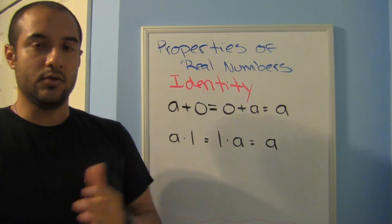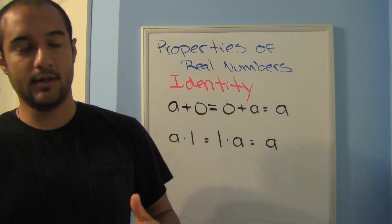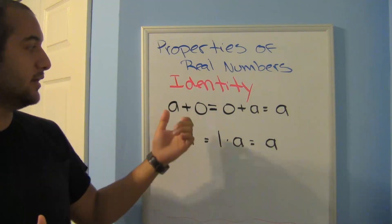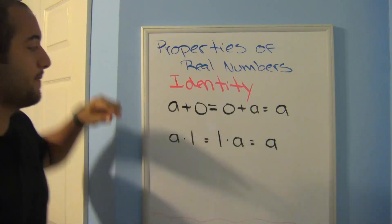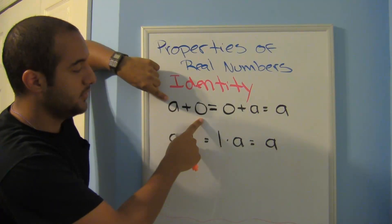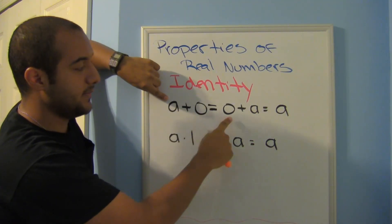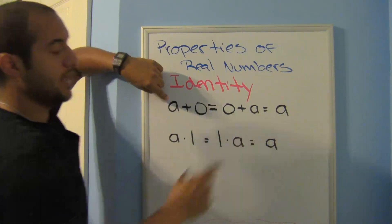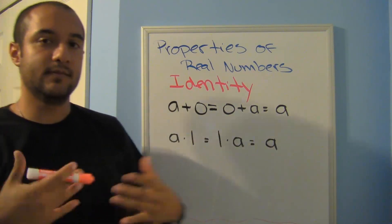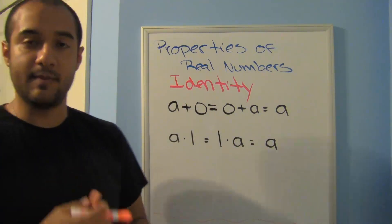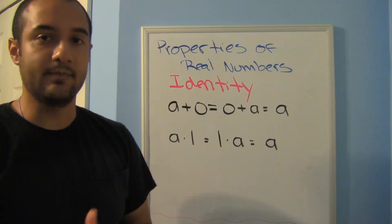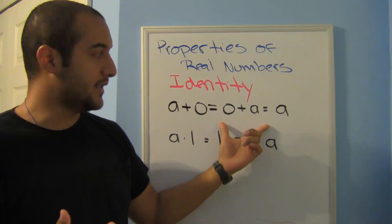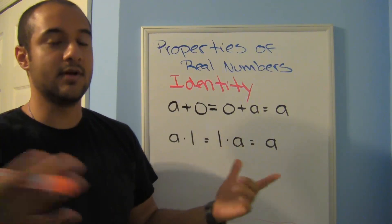The identity property: your identity always stays the same — whether you're wearing a school uniform or hangout clothes, you're still the same person. Similarly, a plus zero equals a. I don't have to write 'plus zero' — that would be like saying my age is '29 plus zero.' Technically correct, but you don't say that.